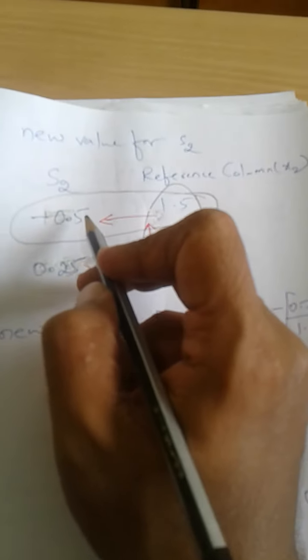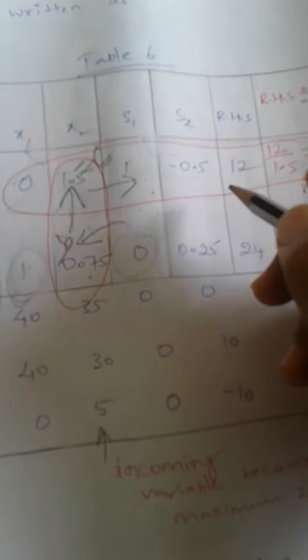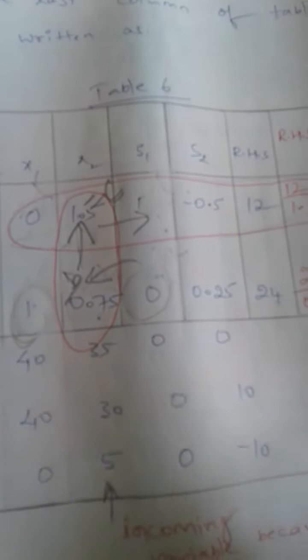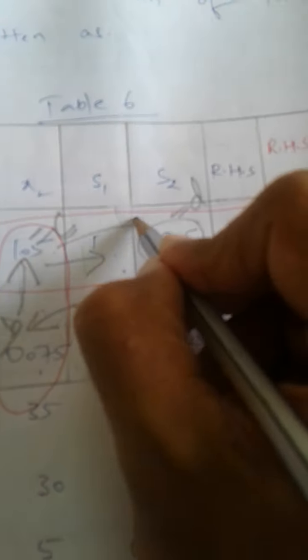Next we calculated the new value for S2. When calculating the new value for S2, we have to consider the S2 column and also the reference column. In the previous table we considered the S2 column values minus 0.5 and 0.25, and the X2 column that is 1.5 and 0.75. In this case, A will be 0.25 because we are finding the new value for this; B will be 0.75, C will be 1.5, and D will be minus 0.5.